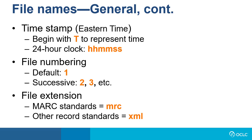Files are output in chunks of no more than 100,000 records per file. If the same output requires more than one file, then successive file numbering is used to designate the file as one of multiple files' output of a set of record type. Last, the file extension MRC is used for output of records in MARC standard, and XML's extension is used for all other standards.